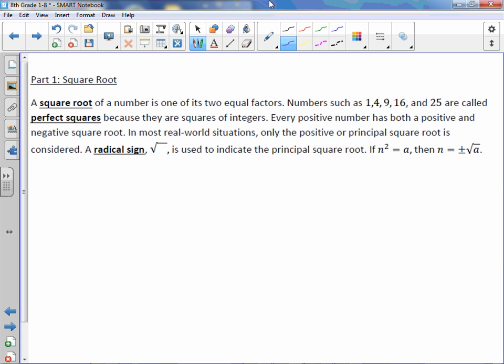A square root of a number is one of its two equal factors. Numbers such as 1, 4, 9, 16, and 25 are called perfect squares because they are squares of integers.